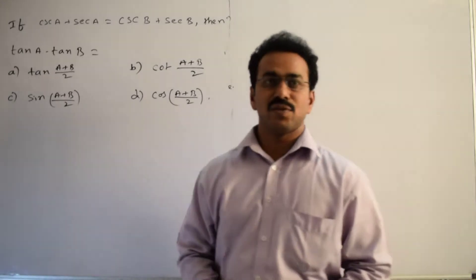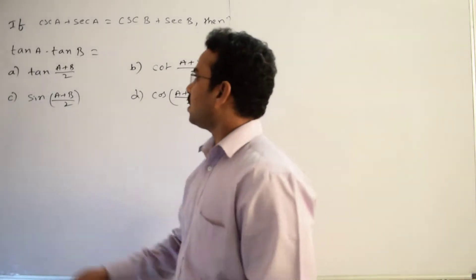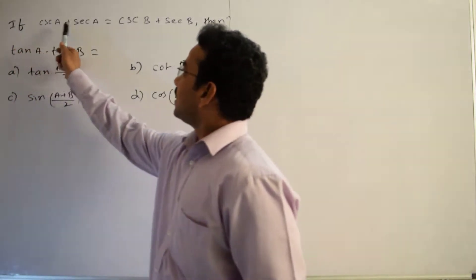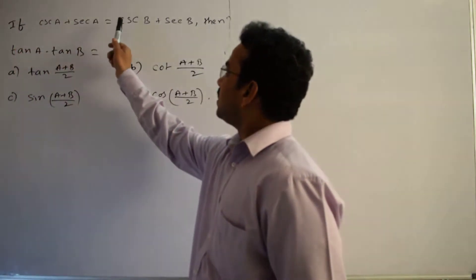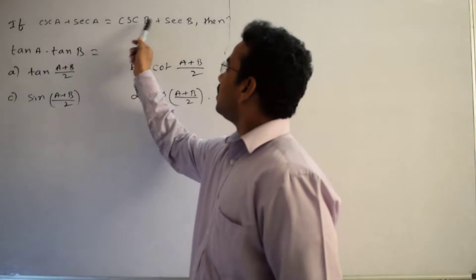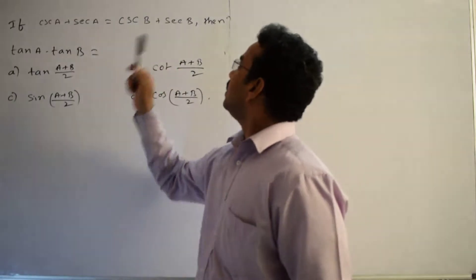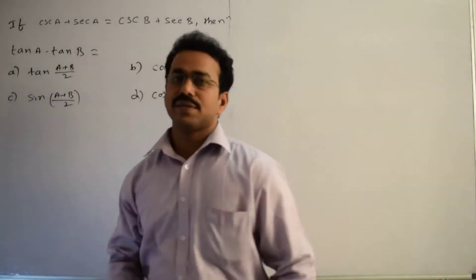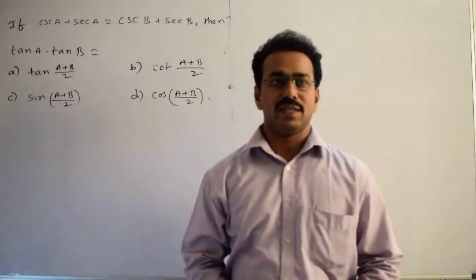Let's discuss the solution of the given question. If cosecant A plus secant A equals cosecant B plus secant B, then tan A into tan B equals how much?